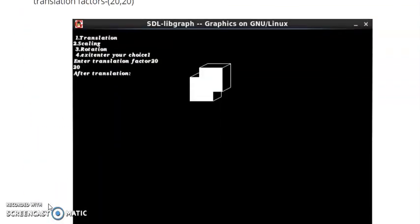Then next your output. First it will ask, we are going to insert translation factor that is 20, 20, and then after translation you can see this is your before translation and this image is your after translation. Thank you for watching this video.